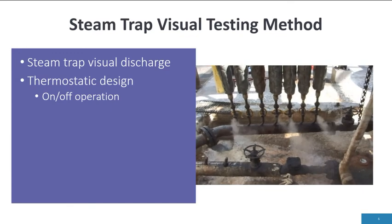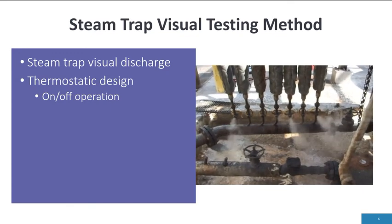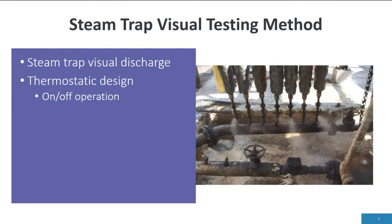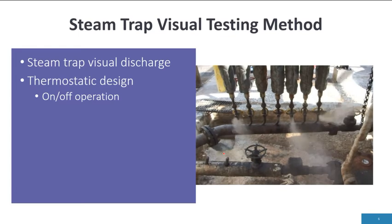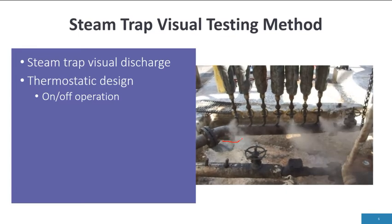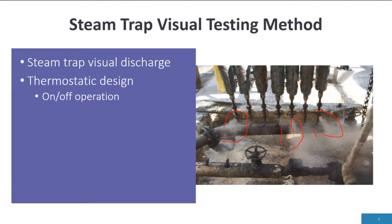In another application, the steam trap is blowing, leaking, blowing, leaking, blowing. These are thermostatic design steam traps, which have a distinct on-off operation. We should see a discharge and then a shutoff. When we open to atmosphere, we can tell that they are blowing or leaking.